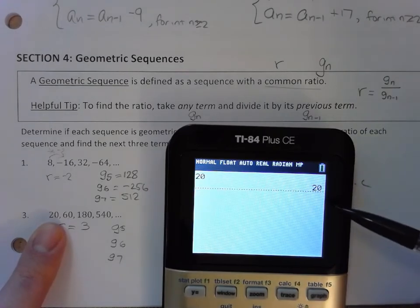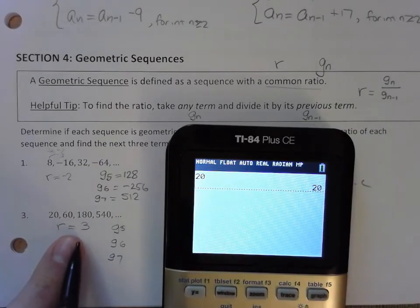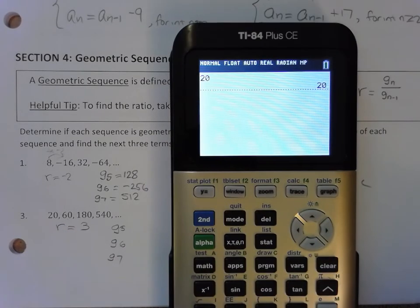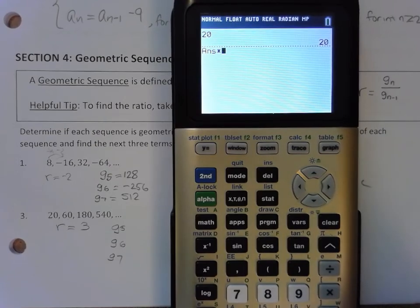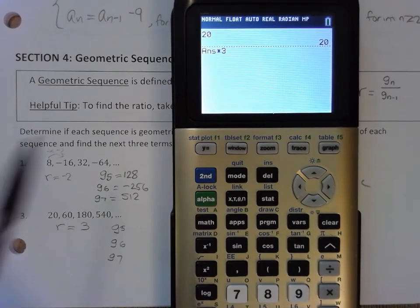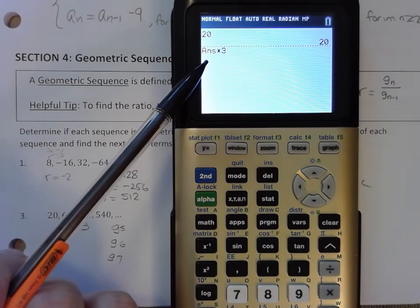So it's going to, of course, display 20 because I didn't give it any operations or commands to do. Now, if my ratio is 3, what I'm going to do then next is to press this button. I'm going to press the multiplication sign and times it by 3 and hit enter. What you notice is that it pops up the ANS or the previous answer.